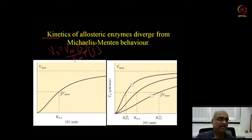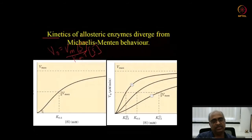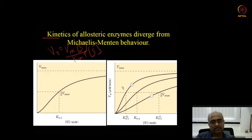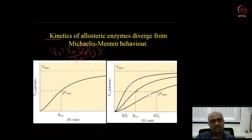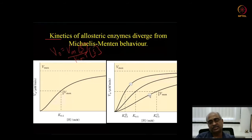That linear initial behavior is not seen in allosteric enzymes, because initial binding increases binding to other subunits, and the rate increases after a lag period. This sigmoidal shape is characteristic of allosteric enzymes. With positive cooperativity the curve shifts in one direction, and with negative regulation it shifts in the opposite direction.